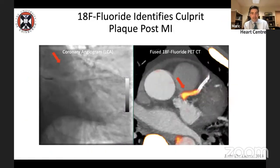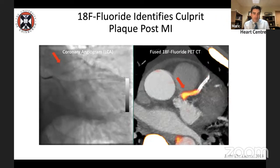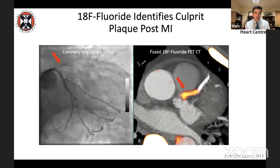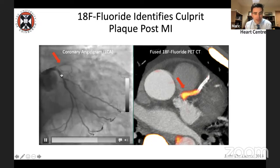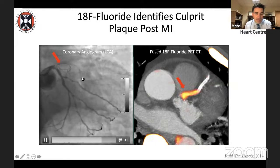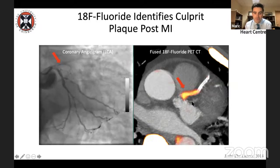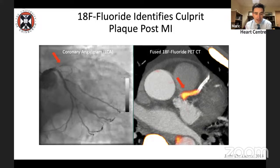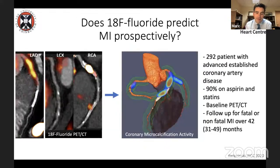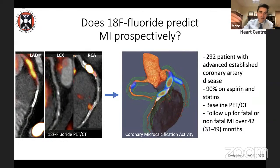Perhaps more interestingly is its relationship with plaque rupture and culprit coronary arteries. We studied patients who had had a heart attack — for example, a patient with an anterior MI whose proximal LAD was occluded with thrombus. A scan a few days after PCI showed the culprit plaque lighting up with the PET tracer. But identifying culprit plaques after the fact isn't all that useful — we know the culprit from the angiogram. What we really want is to predict myocardial infarction prospectively.